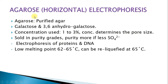The second support medium is agarose. Agarose electrophoresis is also called horizontal gel electrophoresis since it is carried out horizontally. The polymer agarose is a purified form of agar containing monomers galactose and 3,6-anhydrogalactose. The concentration used is 1 to 3 percent, and the concentration determines the pore size of the gel. Agarose is sold in purity grades — the more pure it is, the lesser sulphate ions it contains.